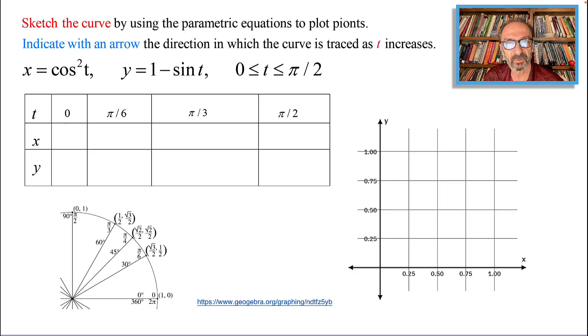To sketch the curve by using the parametric equations given to us as x equals cosine squared t and y equals 1 minus sine t, where t goes from zero to π over 2, I have everything ready. The table takes us from zero to π over 2, stopping at 30 degrees and 60 degrees.